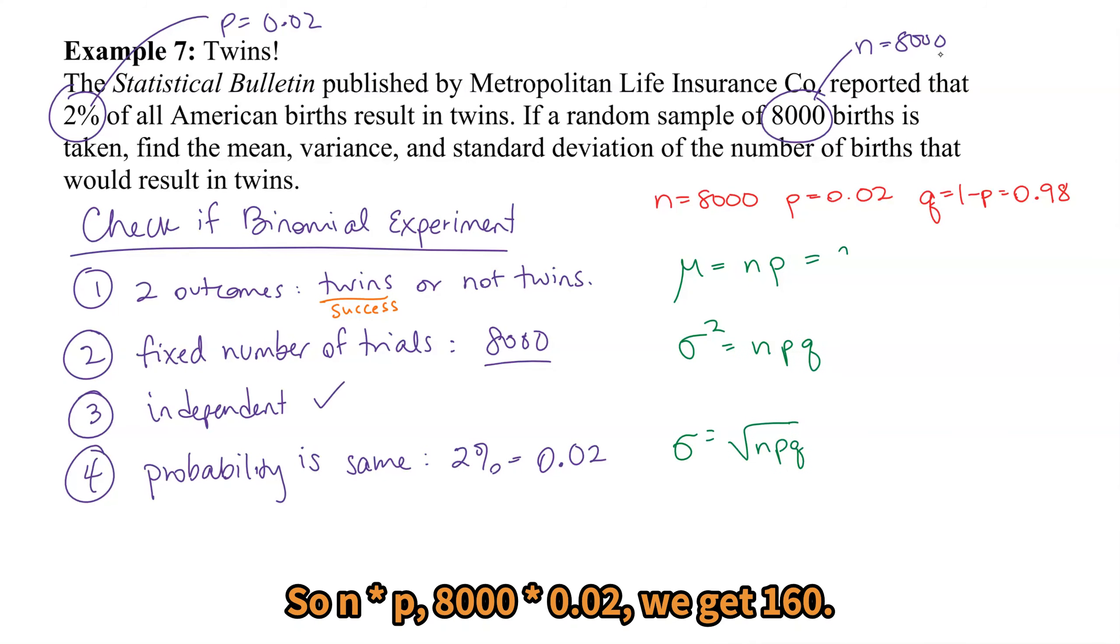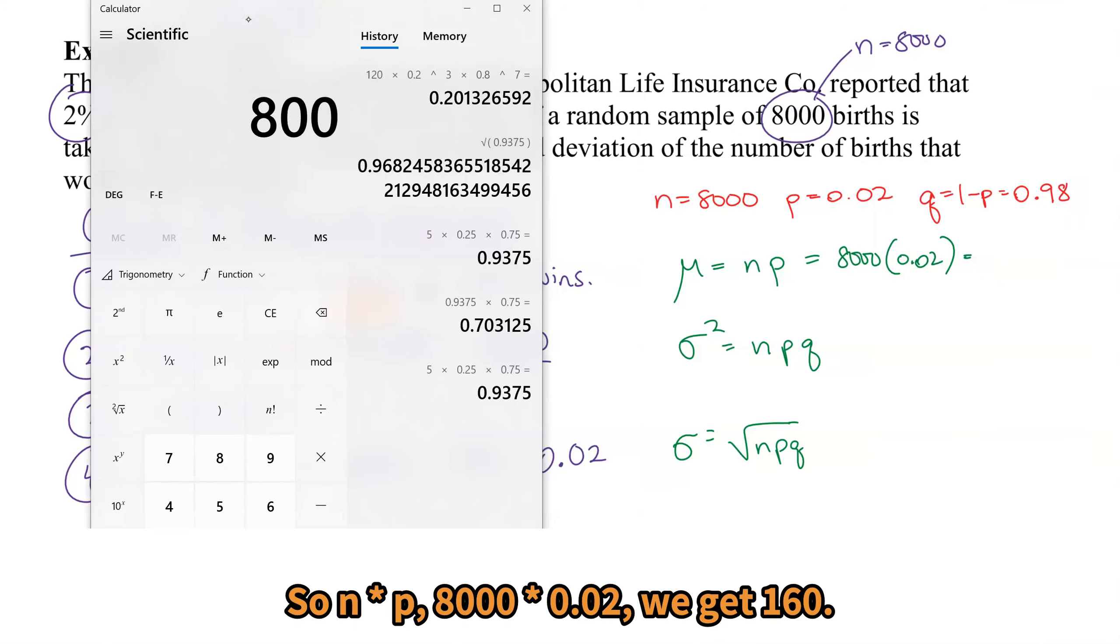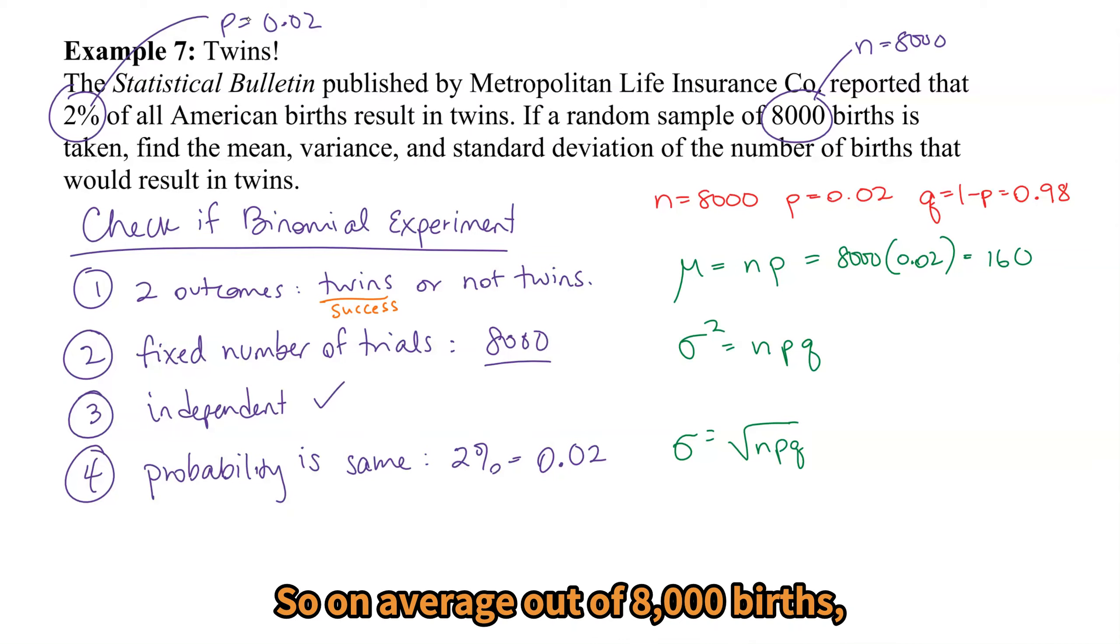So n times p: 8,000 times 0.02, we get 160. So on average, out of 8,000 births, we would have 160 result in twins.